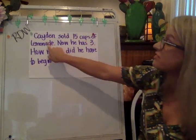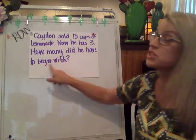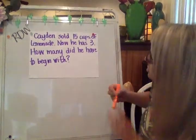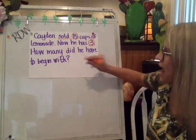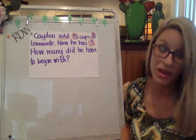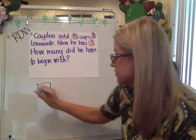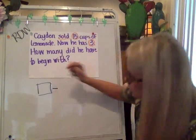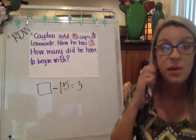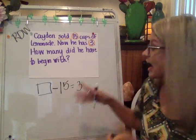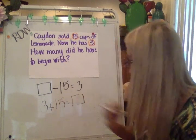Caden sold 15 cups of lemonade and now he has three. How many did he have to begin with? This is a working-backwards type of equation. If he sold them, it means they're gone, and now he has three. We're trying to figure out how many he had before he sold them. We could write the equation more than one way — sometimes you think addition to figure out a subtraction equation. Since addition and subtraction equations are related, I know that three plus 15 will tell me how many he had to begin with.